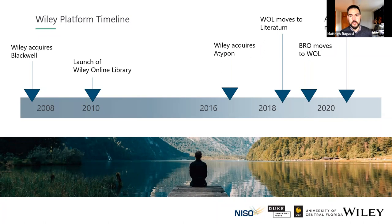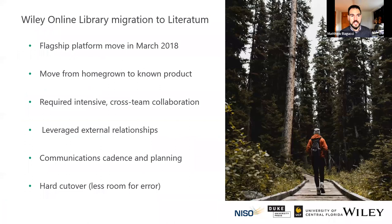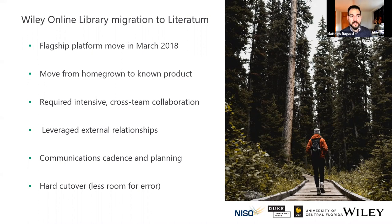Specifically about Wiley's move to Literatum in 2018: Wiley Online Library is our flagship platform. It contains the majority of the portfolio sold and made available to libraries and researchers — 1,600 journals in continuing publication, almost 24,000 online books, 250 reference works, current protocols and lab manuals. So this was not just moving a handful of journals — it was a rather significant endeavor. This move represented our transition from a homegrown platform to something known and constantly evolving to meet the needs of those who interact with it.